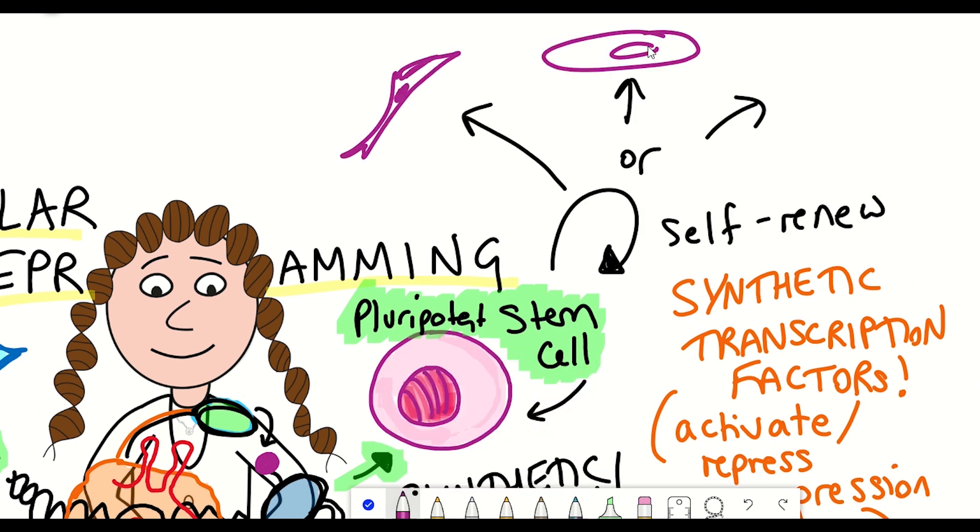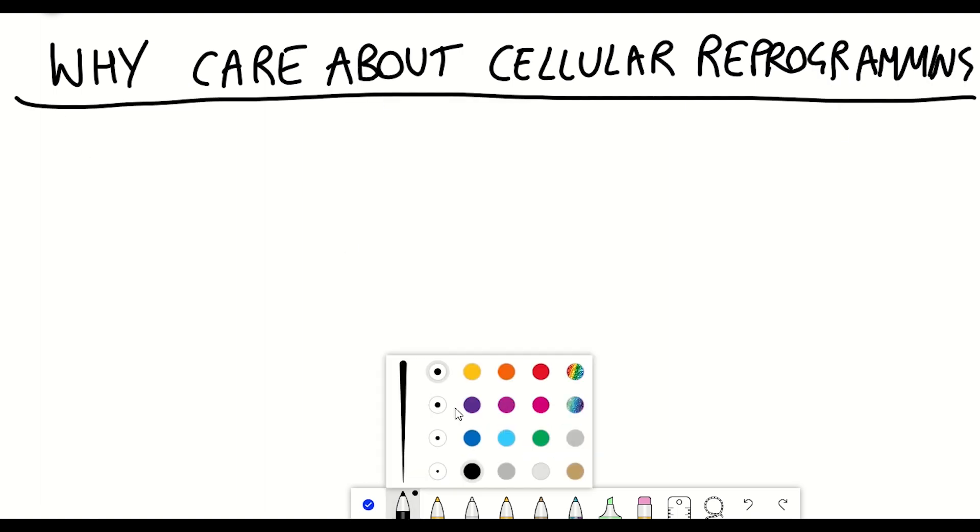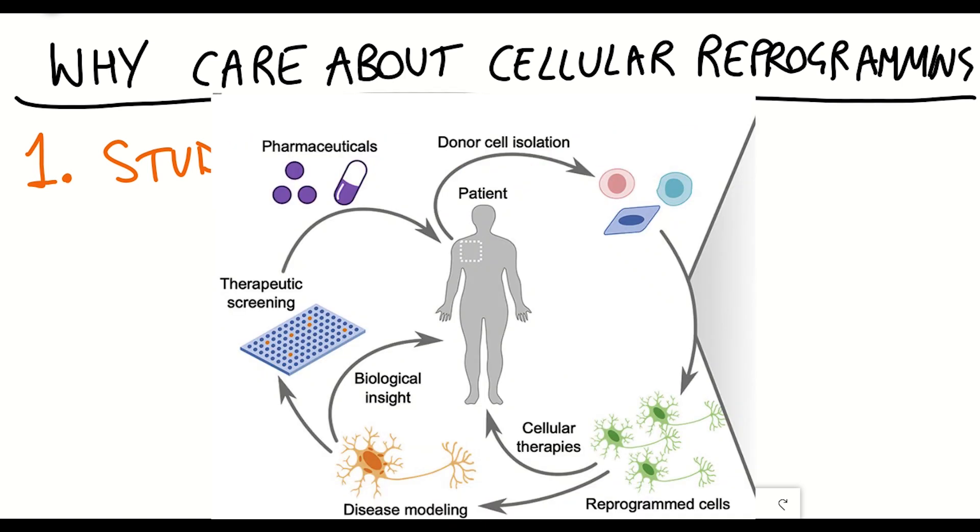And so the reason that cellular reprogramming is of great interest is firstly because it can help us to understand disease processes, whereby you can take cells from a patient, such as blood or skin cells, which are easy to get hold of, convert them back to pluripotent stem cells, and then differentiate them into other cell types, such as neurons, that are much harder to obviously get from a patient. And you can use that to study diseases.